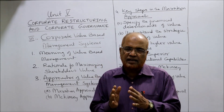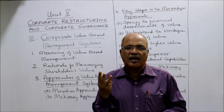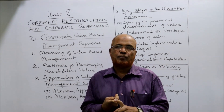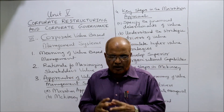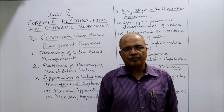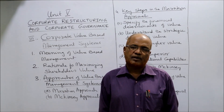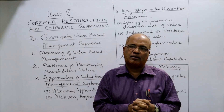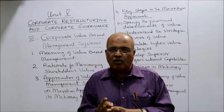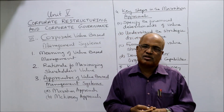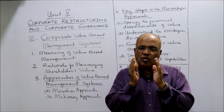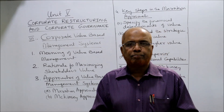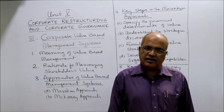McKinsey identifies three things that must be aligned to increase value: first, the company's overall aspirations; second, analytical techniques; and third, management processes. These three should be properly aligned to help the company maximize its value by focusing management decision-making on the key drivers of value. These are the words articulated by Tom Copeland, Tim Koller, and Jack Murray.